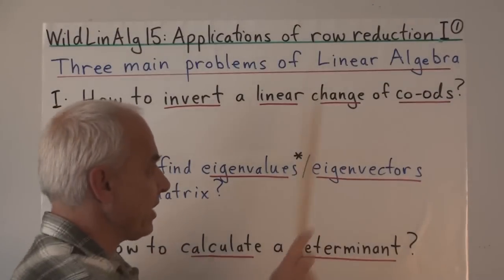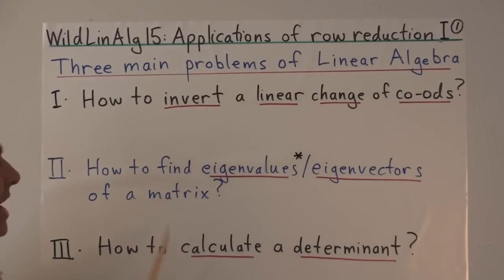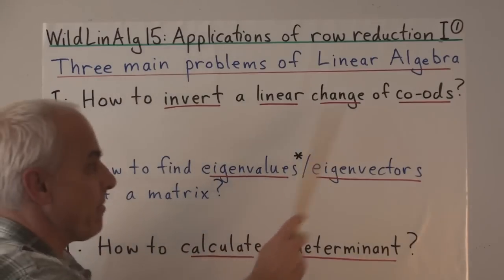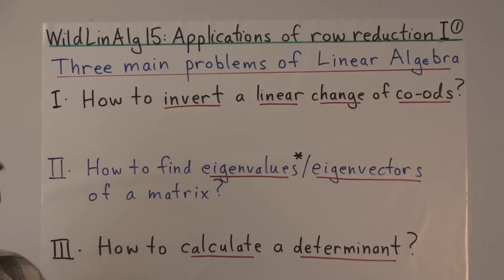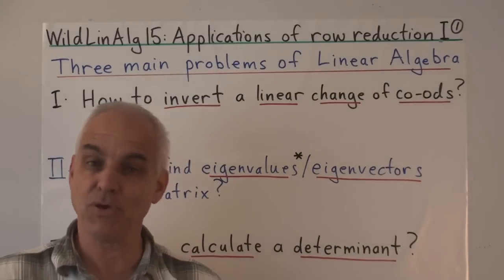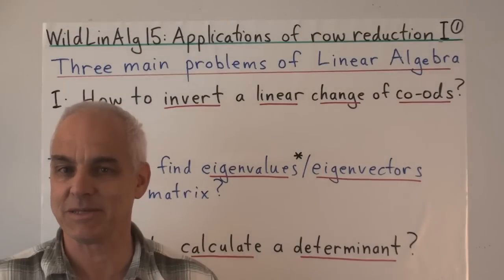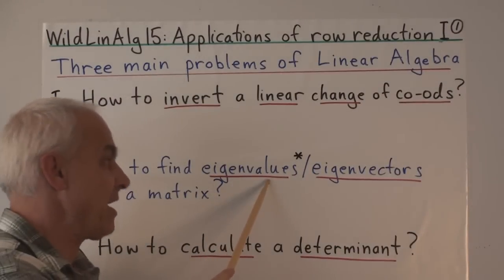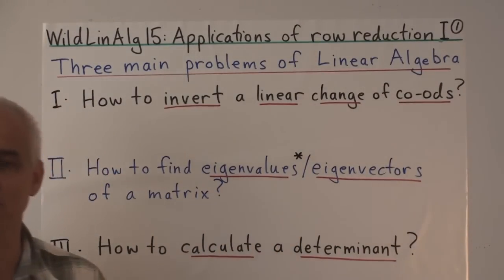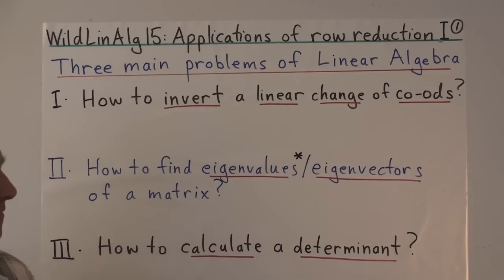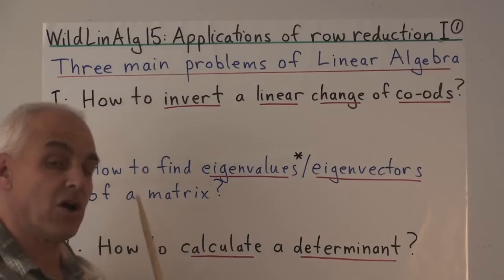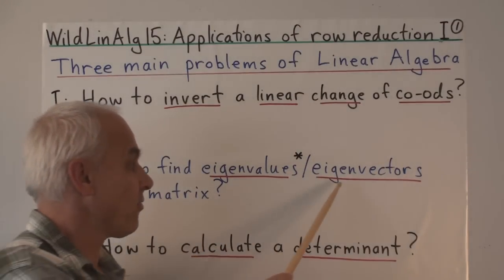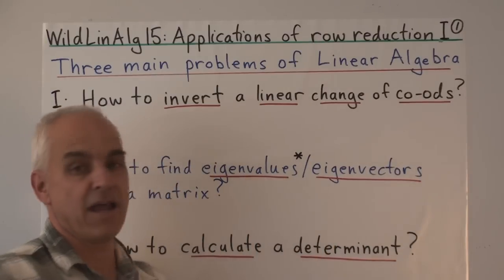The most important problem in linear algebra, which I've already told you about, is how to invert a linear system, or a linear change of coordinates. This problem contains within it the sub-problem of how to compute the solutions to a linear system of equations. The second most important problem is that of finding the eigenvalues and eigenvectors for a square matrix — a very important computational problem. It rests on row reduction to find the eigenvectors given the eigenvalues.